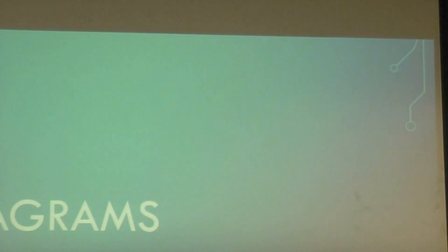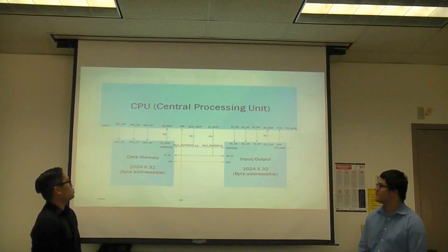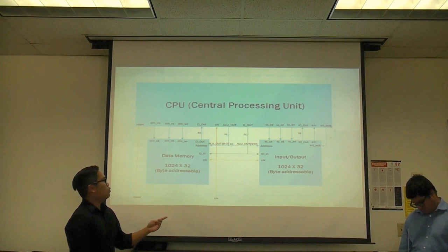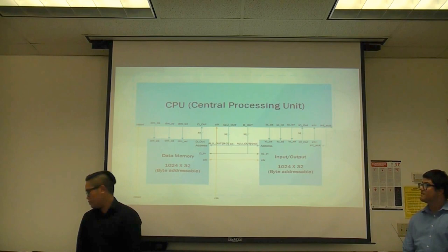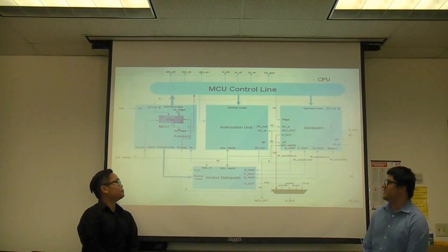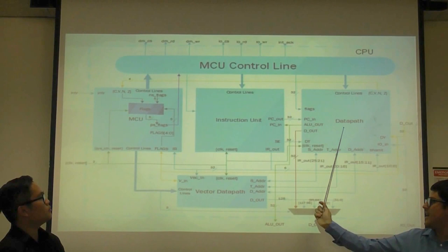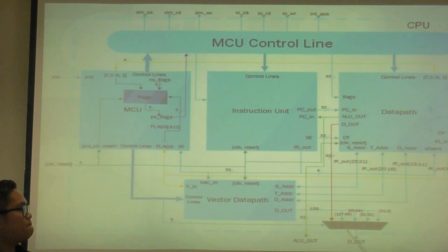Here are our block diagrams. The first one is our top module. It consists of a CPU, data memory, and input and output, with the data memory and input/output being byte-addressable. This is our CPU module. As you can see, we have a control unit, instruction unit, an integer data path, and a vector data path. We also have a multiplexer, which is used to determine whether the loads and stores are between a vector or an integer.